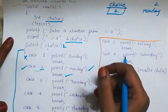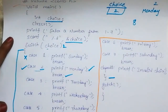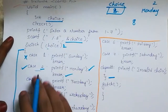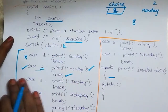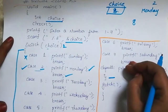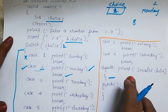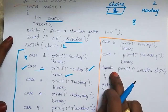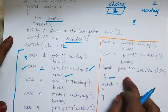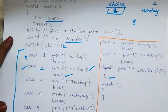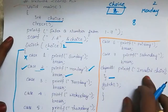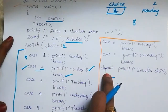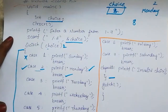If the user enters 8, case 1 does not match, case 2 does not match, case 3, 4, 5, 6, 7 — none match. Since 8 has no matching case, control goes to the default case. We are entering an invalid choice, so the default case prints 'invalid choice'. Since default is the last case, after it executes the switch closes automatically, so a break in default is optional.